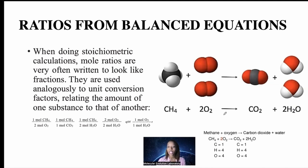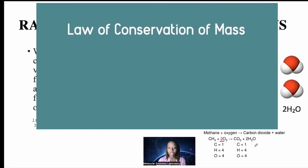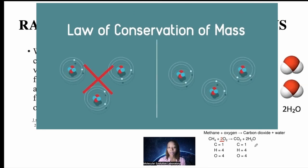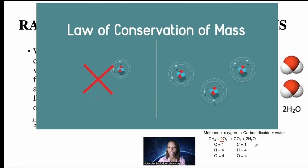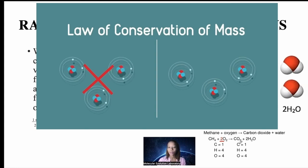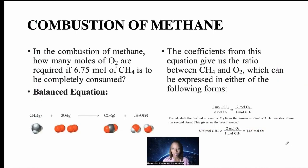To balance CH4 + O2 → CO2 + H2O, we insert a coefficient of 2 on the product side. This is because the law of conservation of matter states that matter cannot be created or destroyed — it only changes form. If you start with a certain number of atoms on the reactant side, you must end up with the same number on the product side.